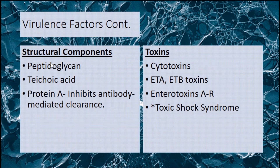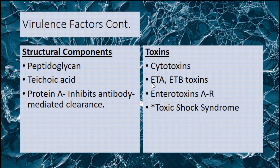Continued structural components are peptidoglycan, teichoic acid, and protein A. Protein A helps inhibit antibody-mediated clearance. The toxins include cytotoxins, which are toxic for many cells including erythrocytes, fibroblasts, leukocytes, macrophages, and platelets. There are also exfoliative toxins, abbreviated ETA and ETB, and enterotoxins A through R.